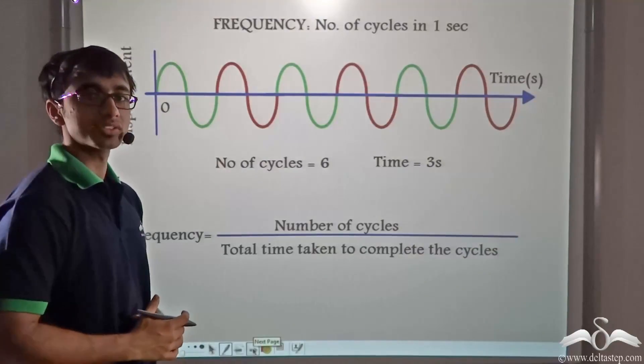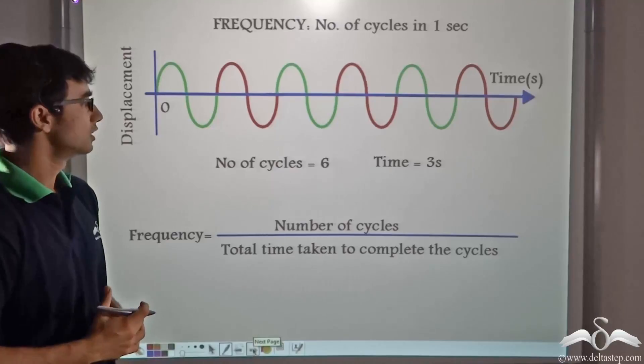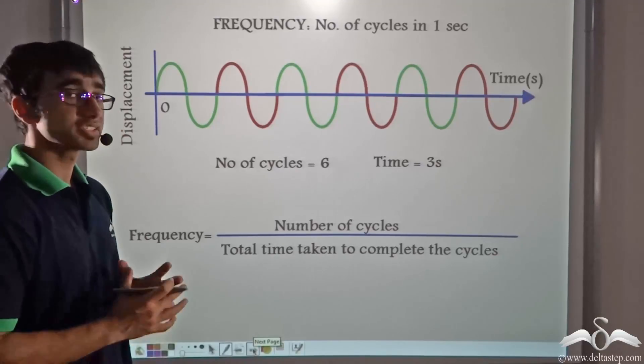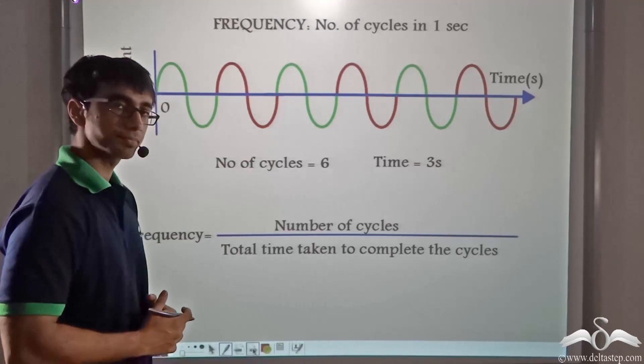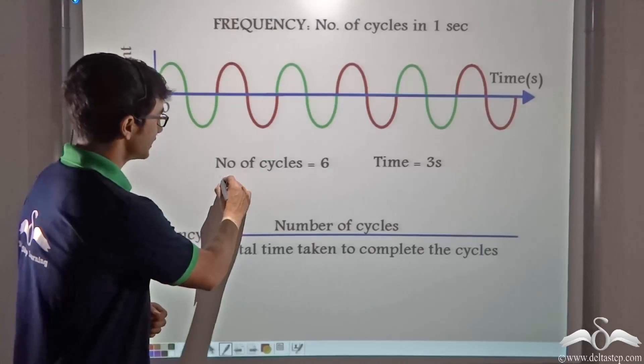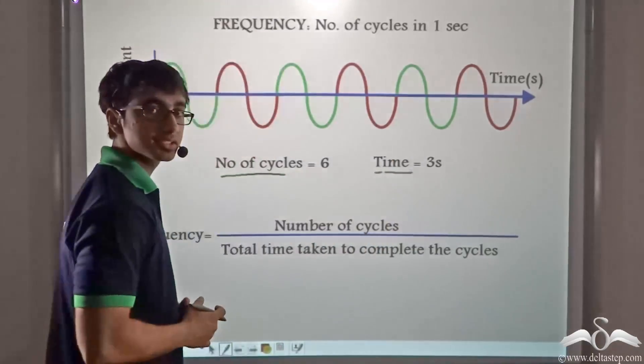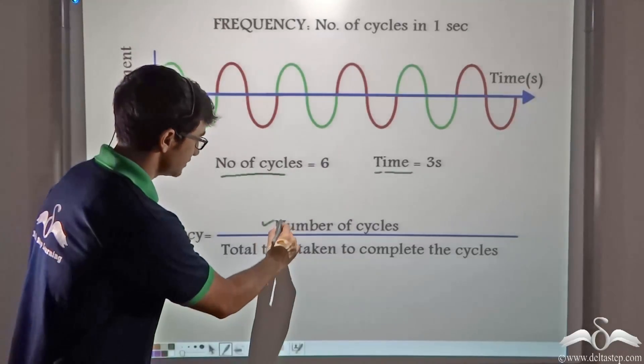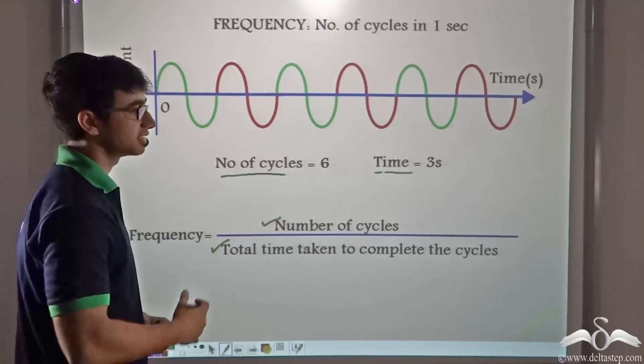To understand this concept, we need to take a recap of frequency. So what was frequency? Frequency was the number of cycles per second. And how can we find out frequency? If you are given the number of cycles and the total time taken to complete those cycles, then frequency is defined as the number of cycles divided by the total time taken to complete the cycles.